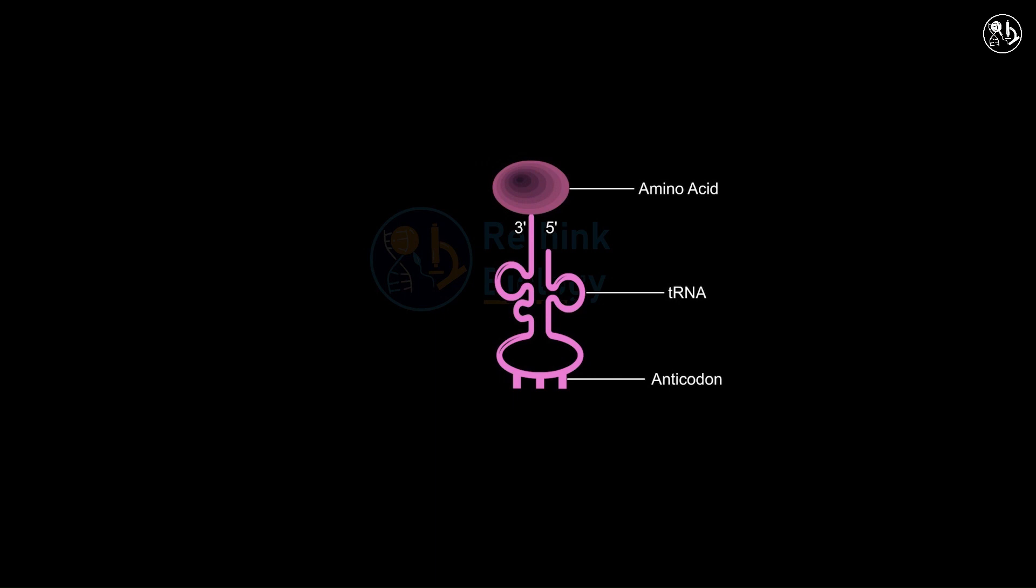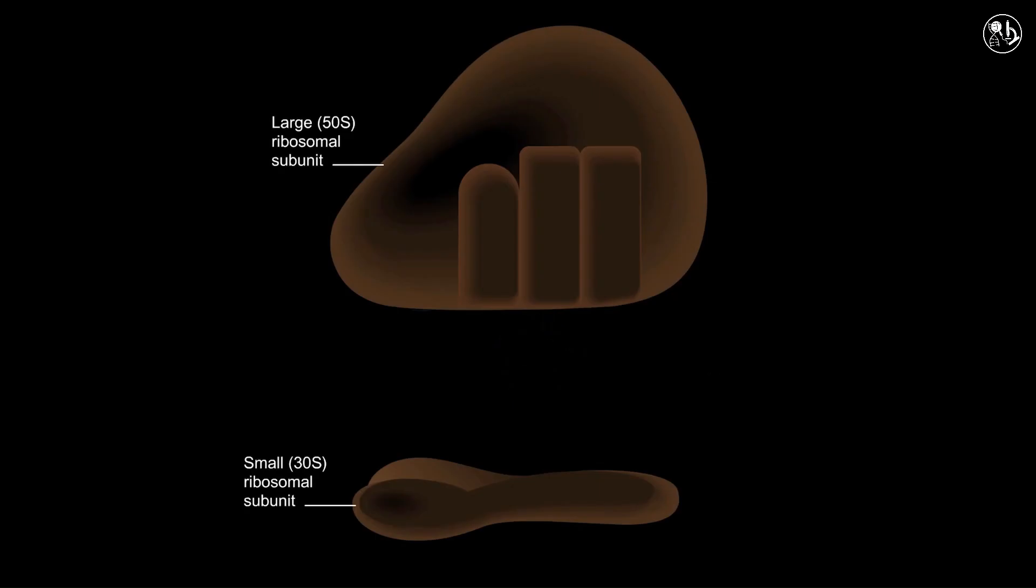The ribosome assembles amino acids into a polypeptide. Ribosomes have two parts, a large subunit and a small subunit.